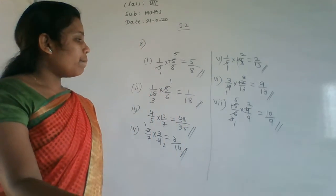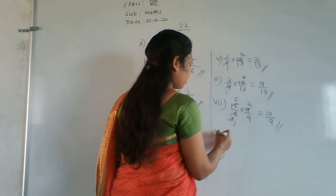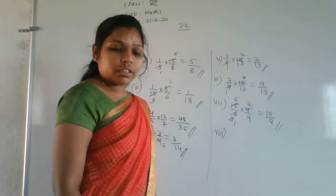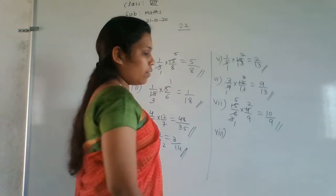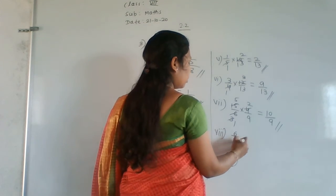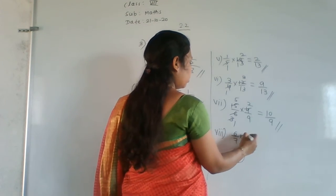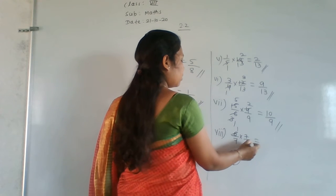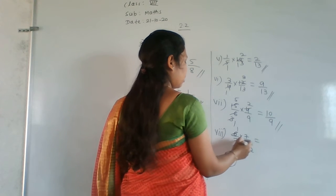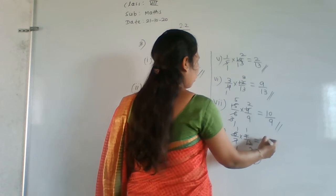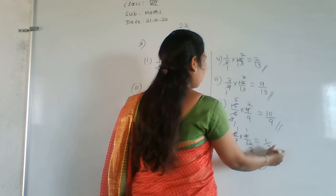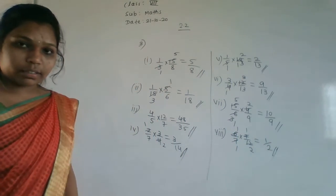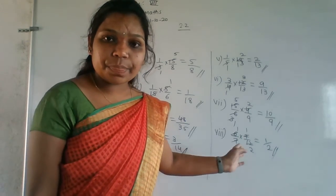Eighth question: 6/7 × 7/12. Cancel 6 and 12: 6 ones are 6, 6 twos are 12. Cancel 7 and 7: 7 ones are 7. After cancellation, 1×1=1 in numerator and 1×2=2 in denominator. Answer is 1/2. That completes the 3rd main.